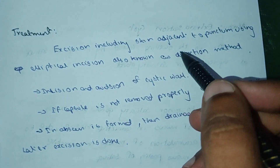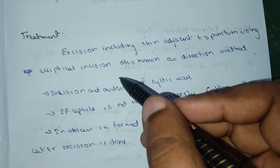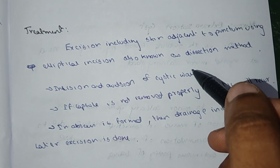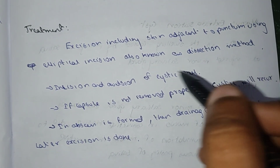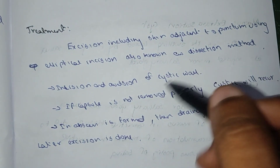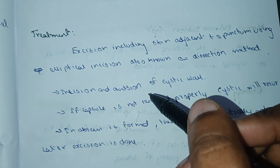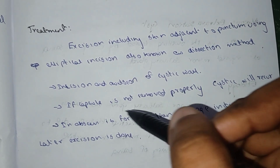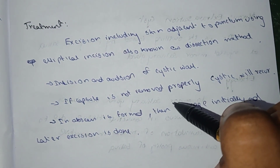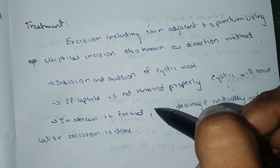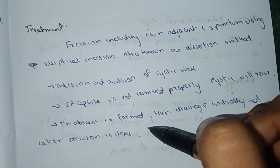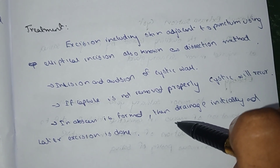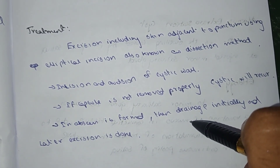Treatment: excision including skin adjacent to the punctum using an elliptical incision, also known as the dissection method. Incision and avulsion of the cystic wall can also be performed. If the capsule is not removed properly, the cyst will reoccur. If an abscess is formed, drainage is done initially, and later the cystic wall is removed.